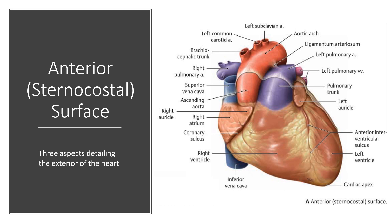The atria of the heart are separated from the ventricles by the coronary sulcus, also called the coronary groove, auriculoventricular groove, atrioventricular groove, or AV groove. This contains the trunks of the nutrient vessels of the heart and is deficient in front, where it is crossed by the root of the pulmonary trunk. On the posterior surface of the heart, the coronary sulcus contains the coronary sinus.